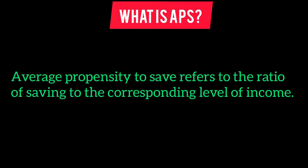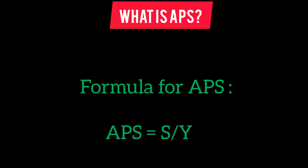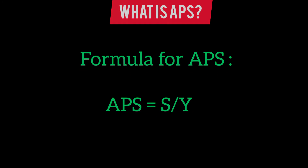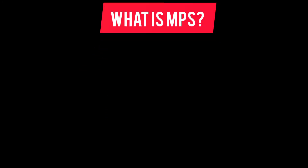Number four: average propensity to save. Average propensity to save refers to the ratio of saving to the corresponding level of income. The formula for APS: average propensity to save is calculated by dividing total savings (S) by total income (Y), that is APS = S / Y.